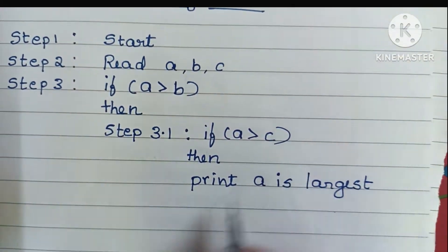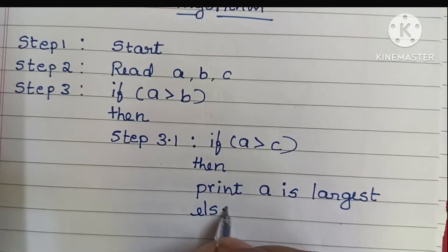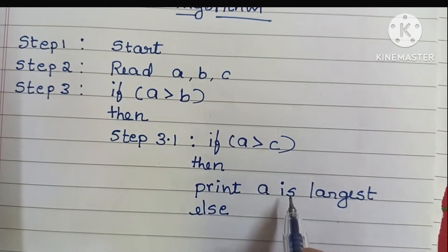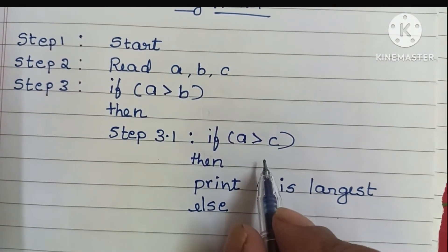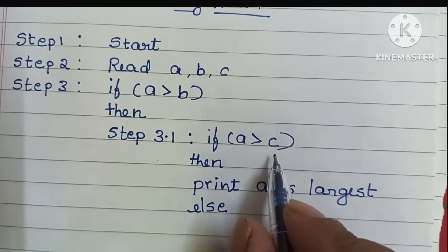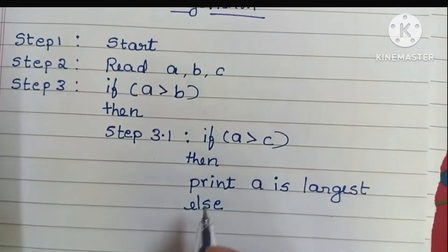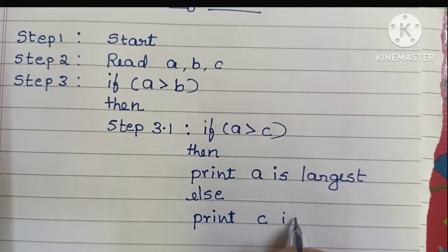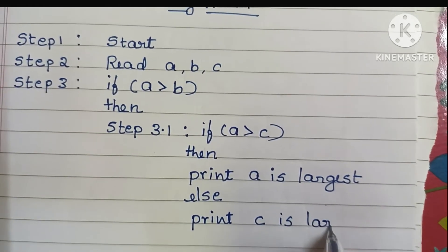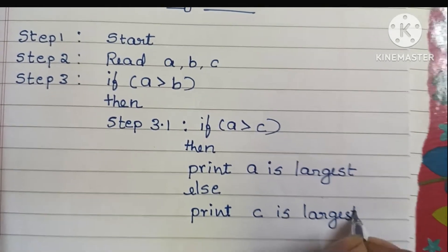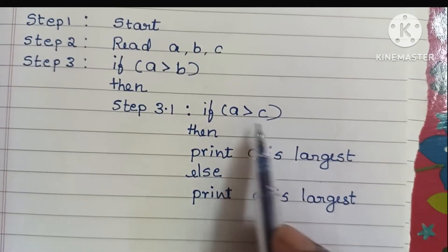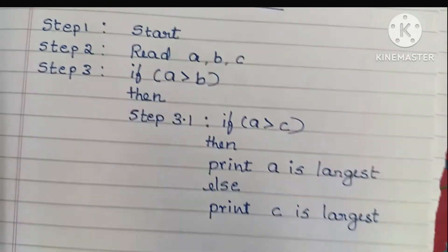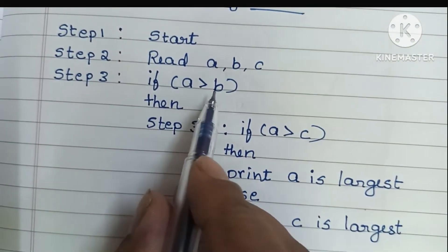Else, if a greater than c is false, we have to print c is largest. So if that condition is false, we print c is largest.